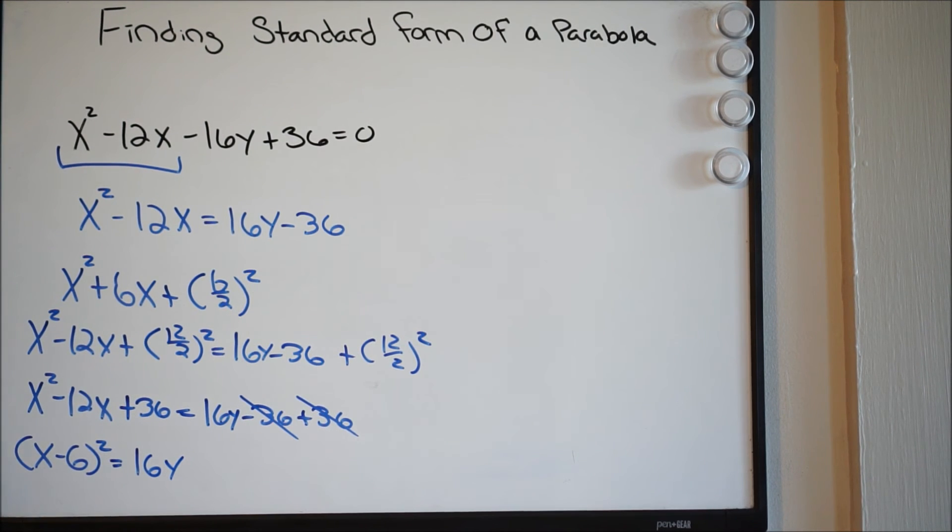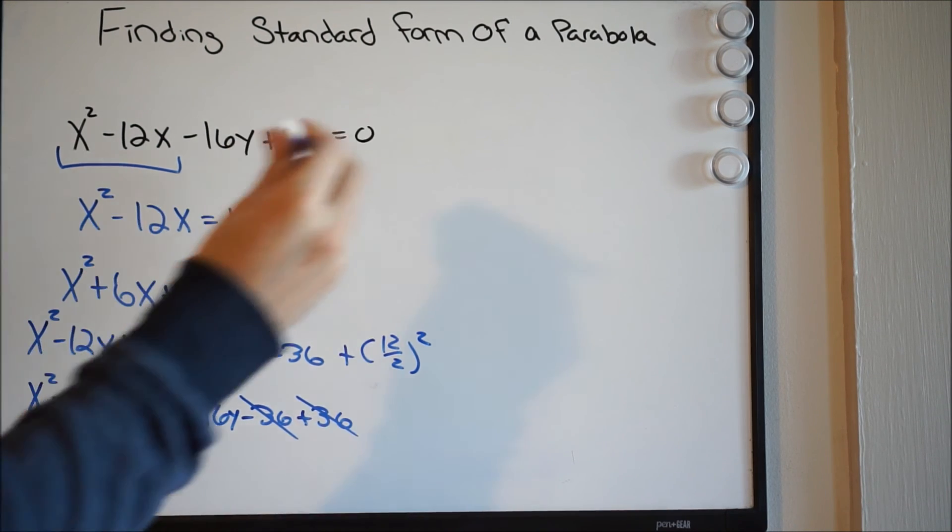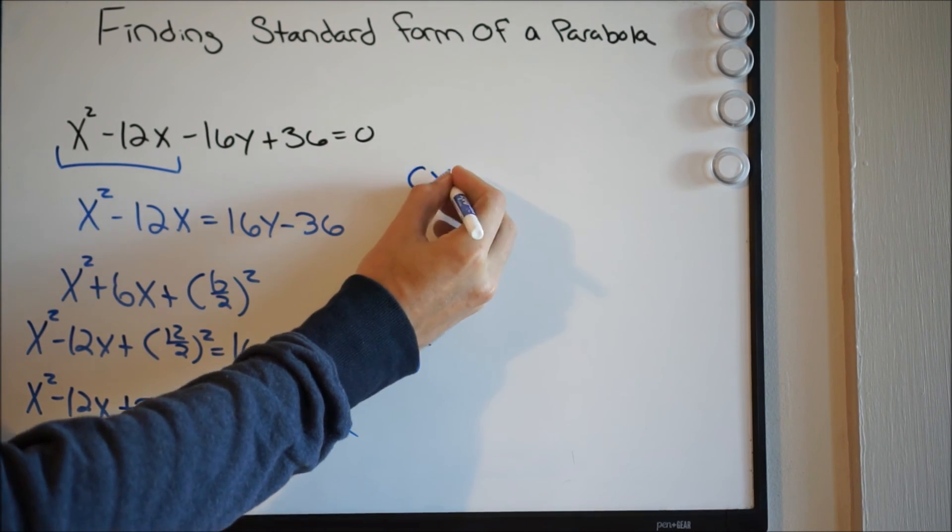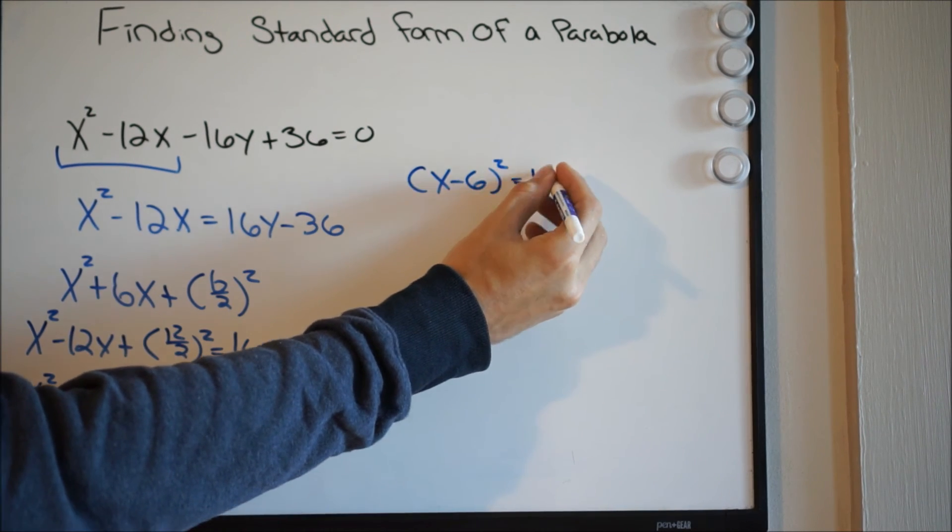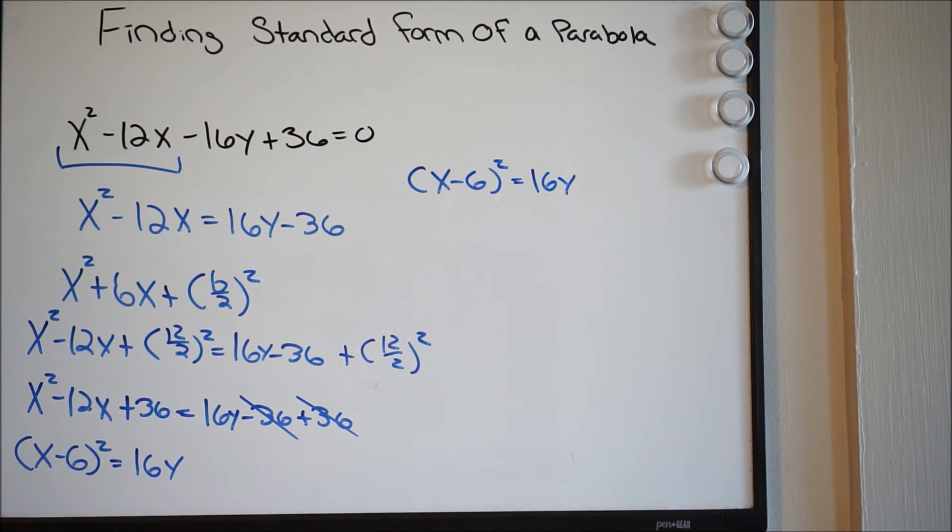So let's go ahead and just finish up this problem. I'll have x minus 6 squared, equal to 16y. Last step, both sides by 16.